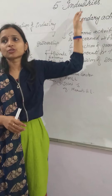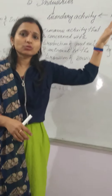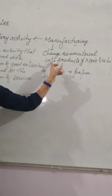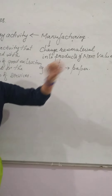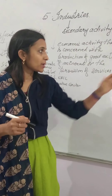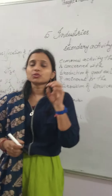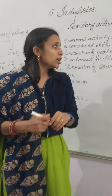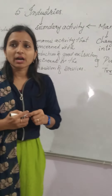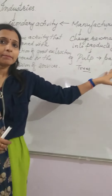Industries come into the secondary activities. Secondary activities is also known as manufacturing activities. It means changing raw material into products of more value to people. For example, for the paper or notebook that you use for writing, firstly we cut the trees and remove the bark and take its pulp, and the pulp is converted into a valuable paper.